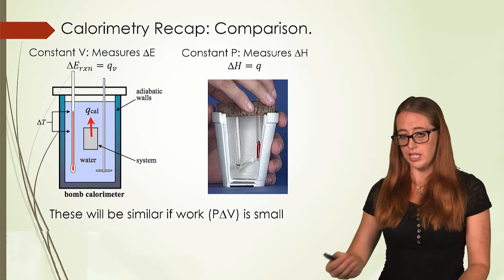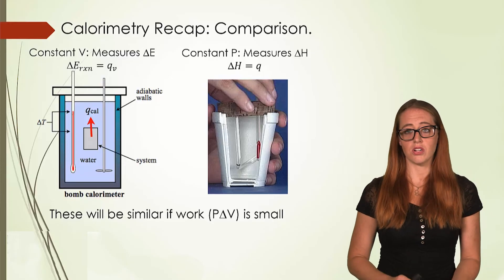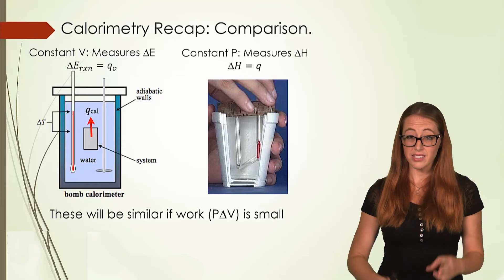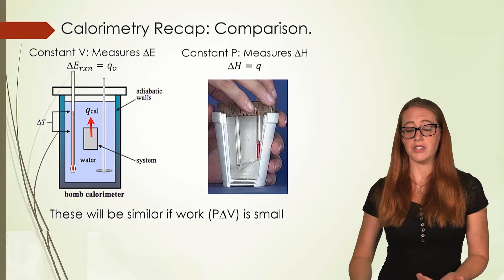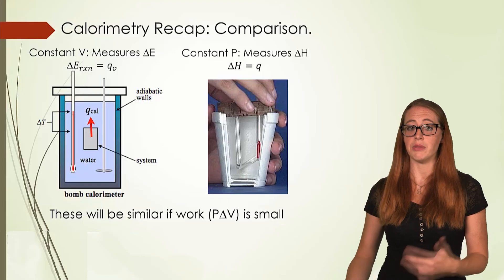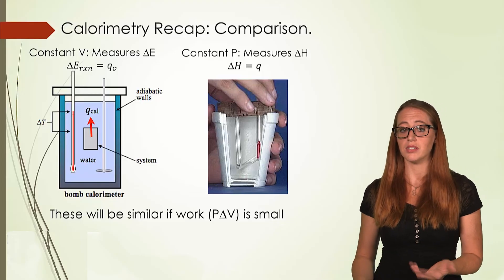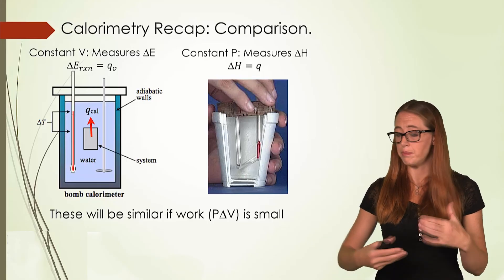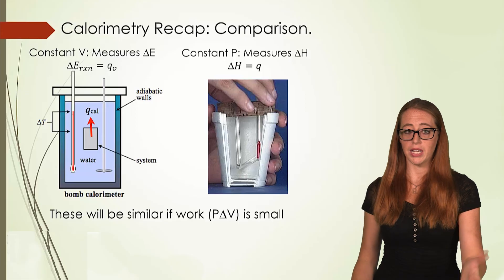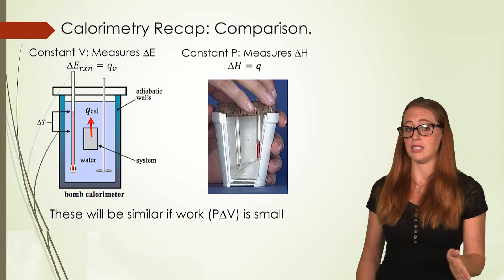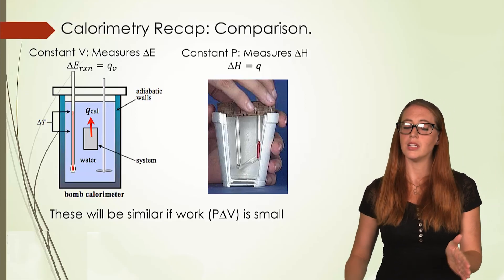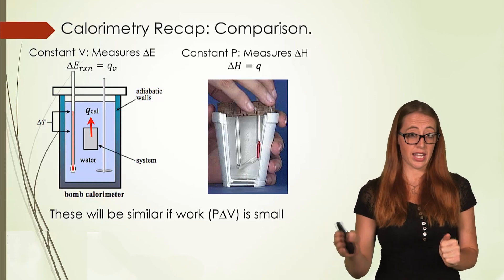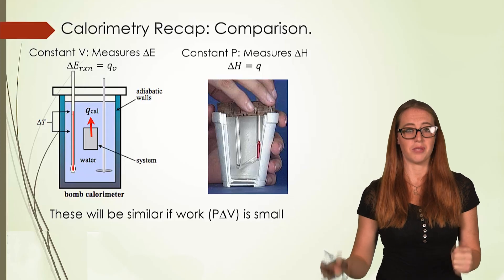Later on in chapters, it can start feeling like delta E, delta H, and Q are all synonymous — but this is not true. It's just that often the situations we're in allow them to be relatively close in value. When you are doing calorimetry, you are measuring Q in both cases. In bomb calorimetry, Q is equal to delta E — not synonymous with, but equal to. And in coffee cup calorimetry, Q is equal to delta H — not synonymous with, but equal to.